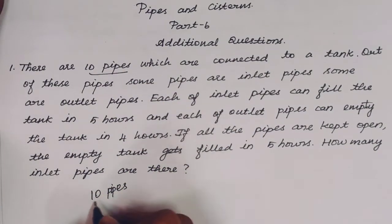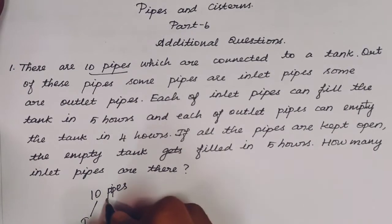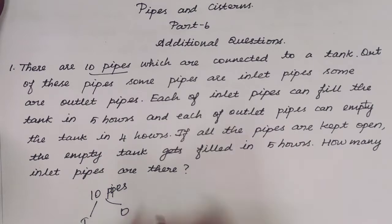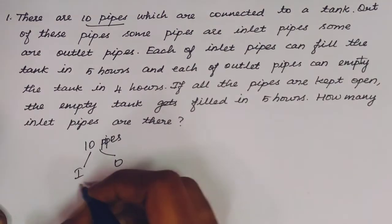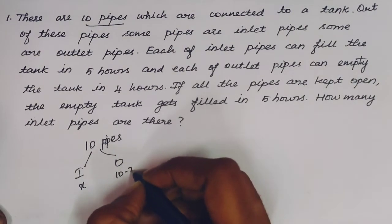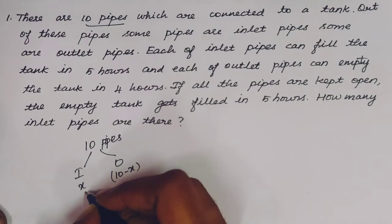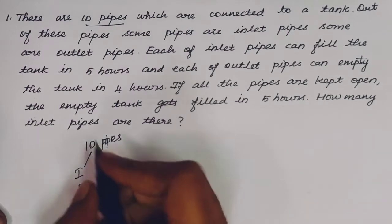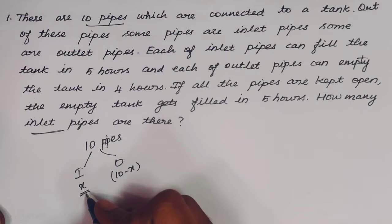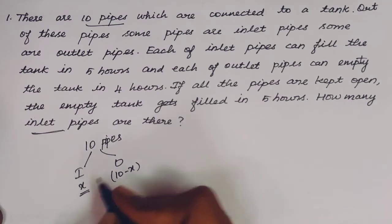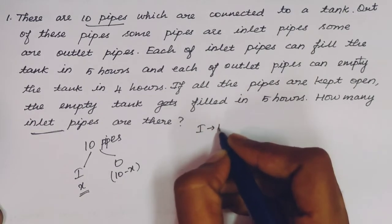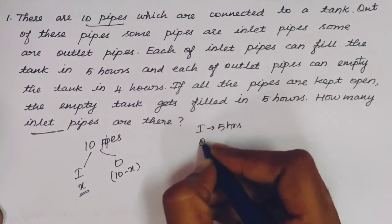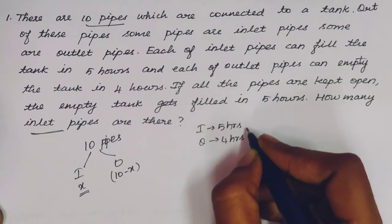We define: number of inlet pipes = x, and number of outlet pipes = 10 − x. Each inlet pipe can fill the tank in 5 hours and each outlet pipe can empty the tank in 4 hours.